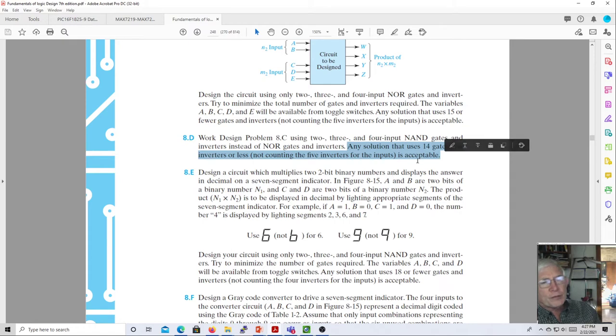The inverters on the inputs, so all your inputs, if you have four inputs A, B, C, D, you always have available A, A prime, B, B prime, C, C prime, D, D prime. You don't have to get charged for those gates, those inverters.